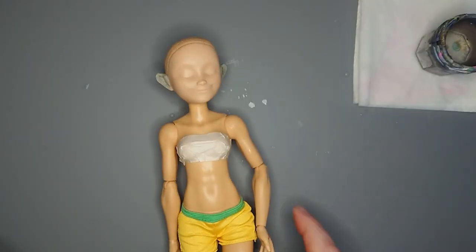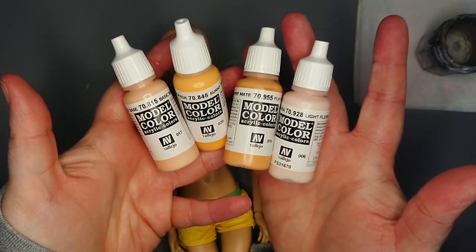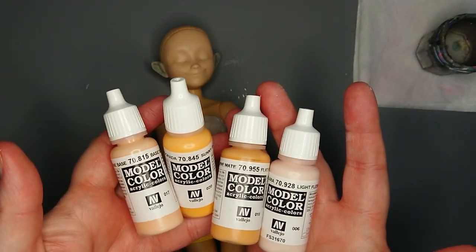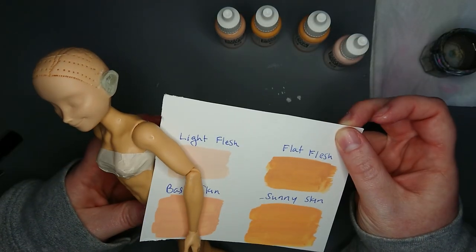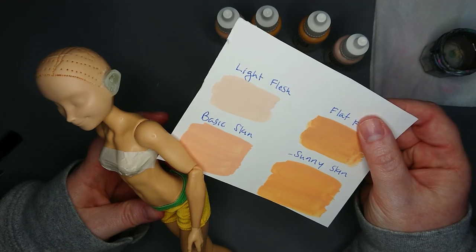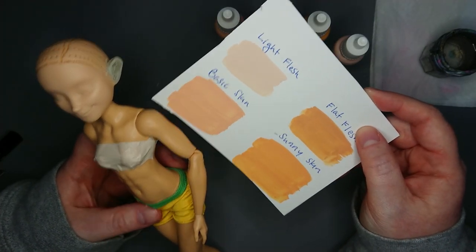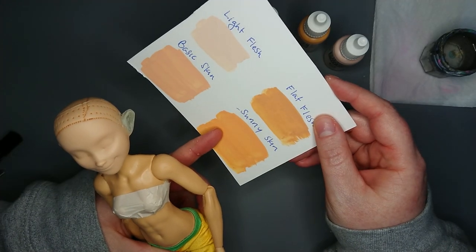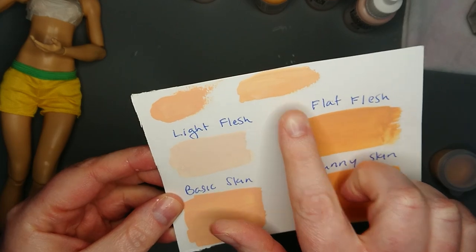As you can see, the skin tone of the head is a bit different from the body. I'm not too confident about mixing skin tones myself, so I ordered a few different ones so I'd have a good base for mixing. I swatched all four colors and compared them to the body, and it looks like it's somewhere in between basic skin and sunny skin. So I make a mix of those two to give her basic, sunny skin.